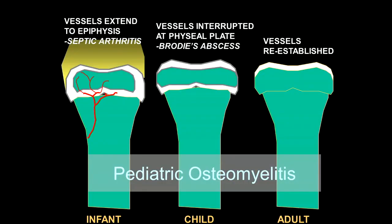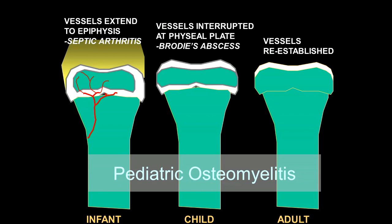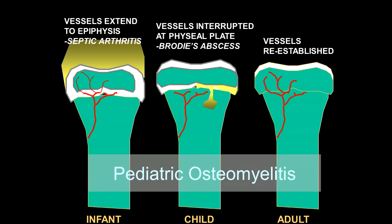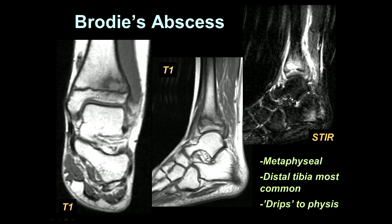In children, infection has a very interesting mode of spread that varies depending on the age of the pediatric patient. In infancy, blood vessels and arterioles extend all the way to the epiphysis, and hematogenous spread of infection typically presents as septic arthritis in those young patients. In children, the epiphysis and metaphysis have separate end arterioles, and the infection tends to get deposited into the metaphysis, leading to the classic Brodie's abscess. In adulthood, vessels are reestablished to the epiphysis from the shaft of the bone, leading to a variety of areas where infection can be deposited. Here's a classic Brodie's abscess in a child, going all the way up to the physeal plate, with a classic pattern of fluid signal, surrounding edema, and periosteal reaction.